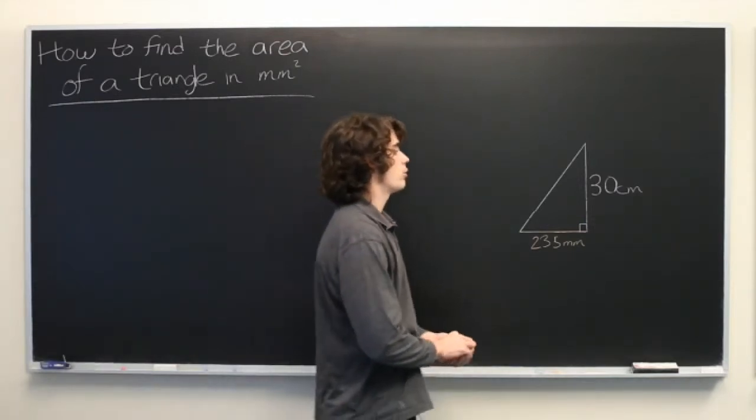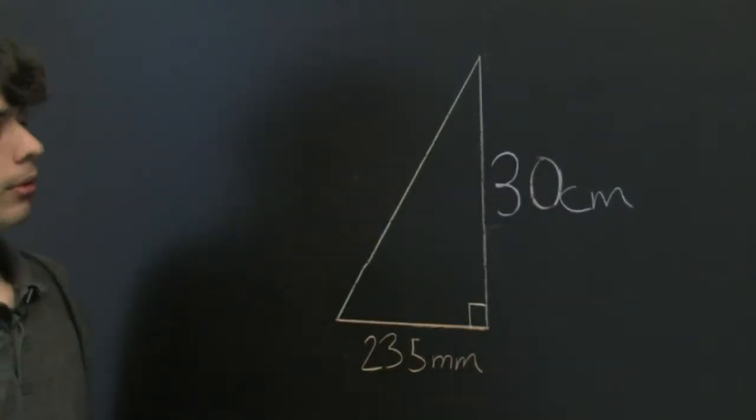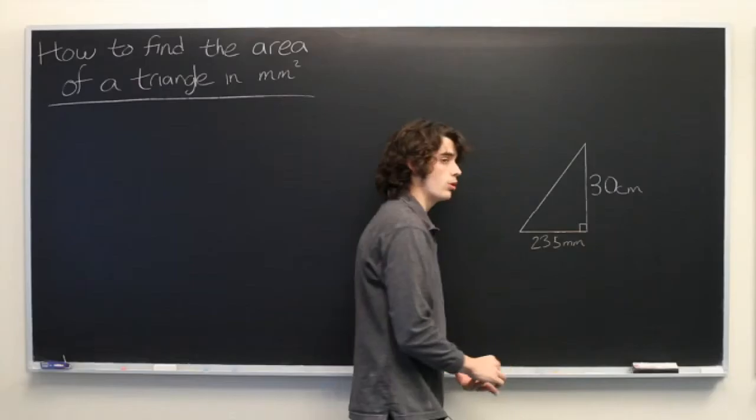So here we have a right triangle whose height is 30 centimeters and whose base is 235 millimeters.